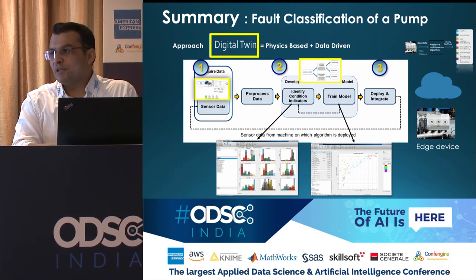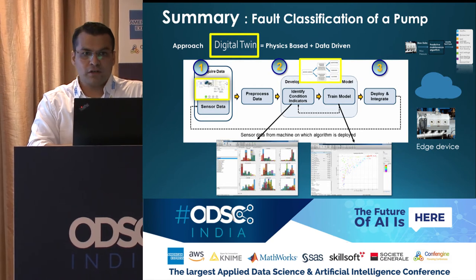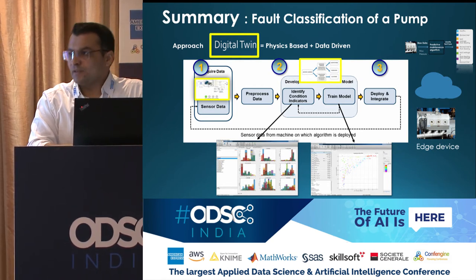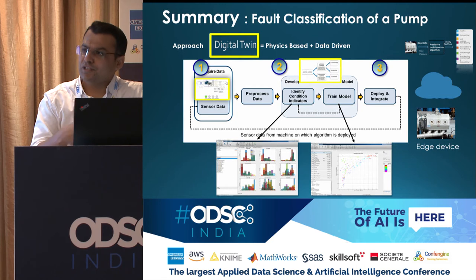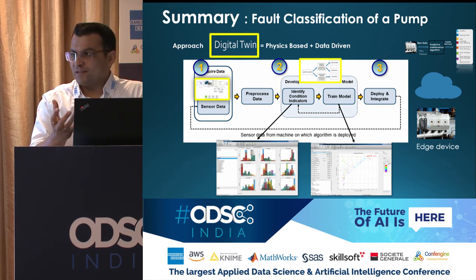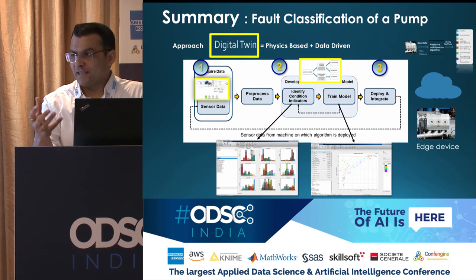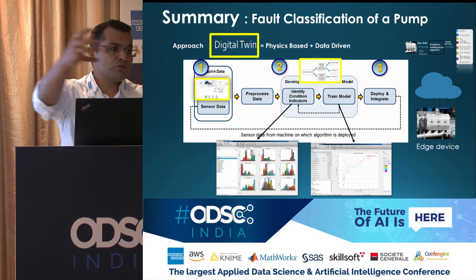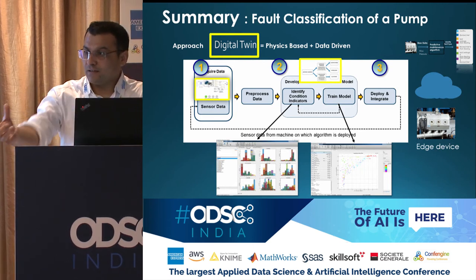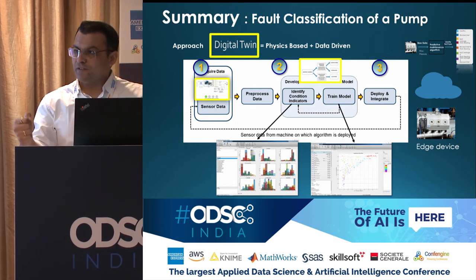Are there any pre-built models — physics-based models — which are available? Yes, there are many models which are available; they get shipped with the tool. We also give you components. For example, a cylinder can be used in a machine or could be used in an engine — so you get the cylinder component. If you know the physics of it, you can connect it.